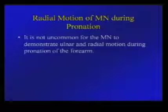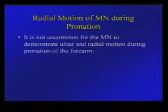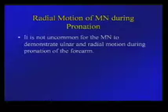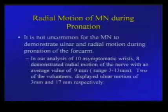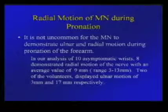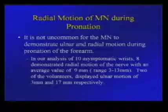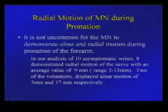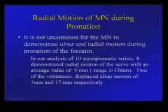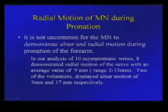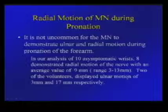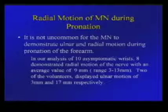There is movement of the median nerve during pronation of the hand. It is not uncommon for the median nerve to demonstrate either ulnar or radial mobility during pronation of the forearm. We have studied this in asymptomatic wrists, showing that there does not seem to be a predilection towards which side the nerve moves — sometimes it moves to the radial side, sometimes to the ulnar side, but movement observable by ultrasound is present.